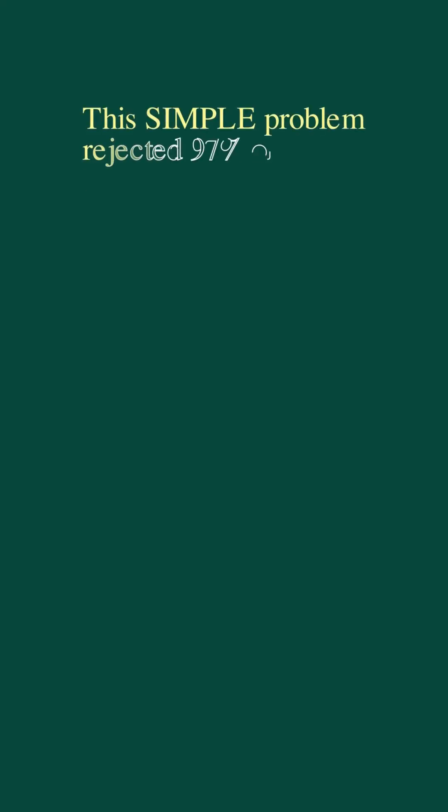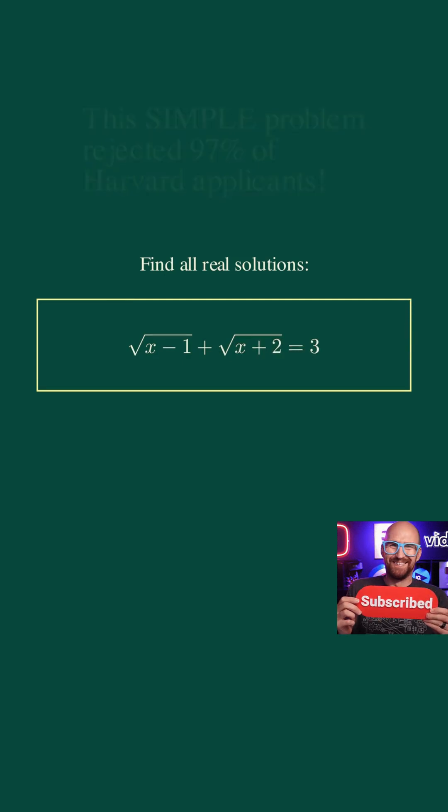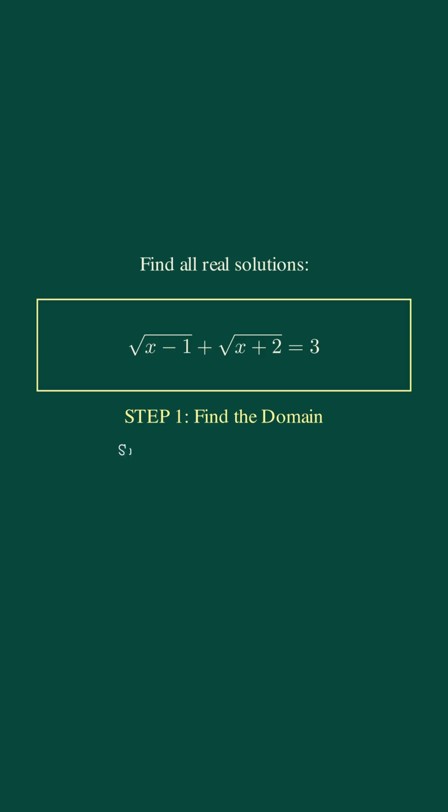This simple problem rejected 97% of Harvard applicants. Find all real solutions: square root of x minus 1 plus square root of x plus 2 equals 3. Step 1: Find the domain. Square roots need non-negative values, so x minus